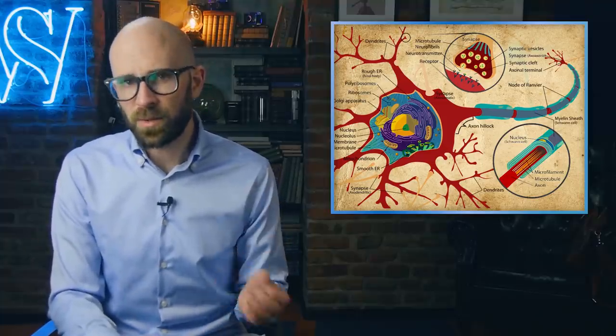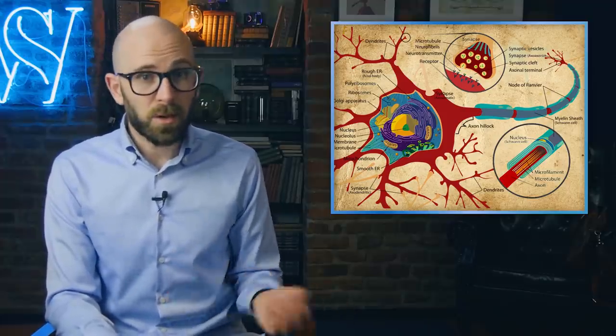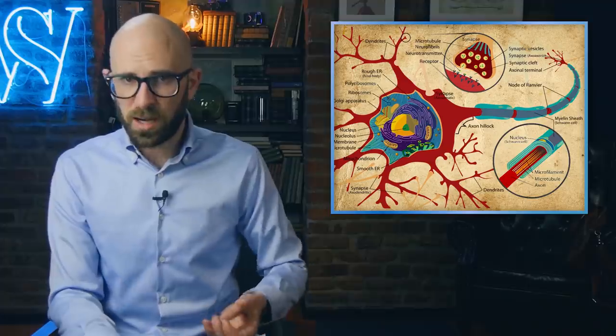These starburst cells, think of a bicycle wheel and its spokes, have numerous tiny filaments called dendrites extending out in a myriad of directions, making complex connections and pathways that are difficult to track.